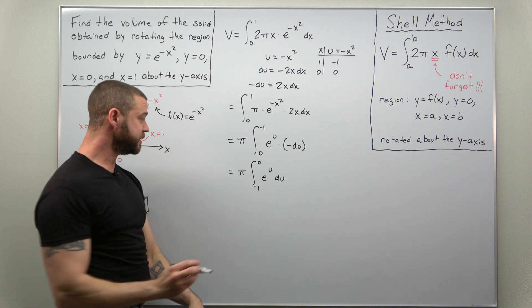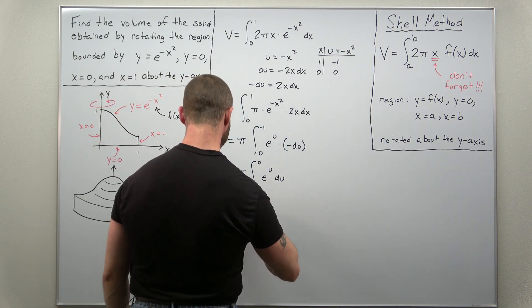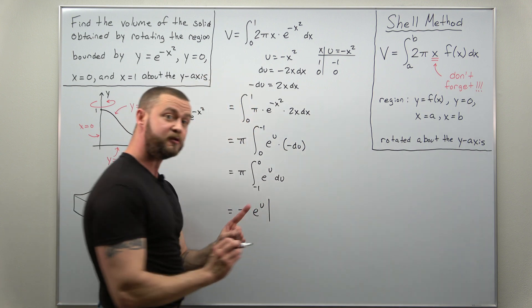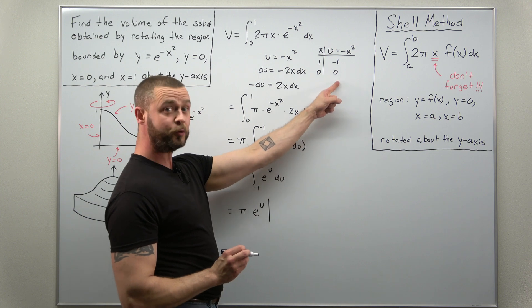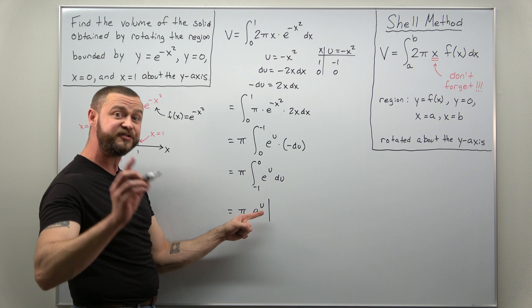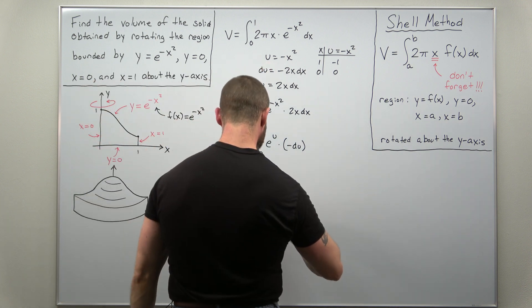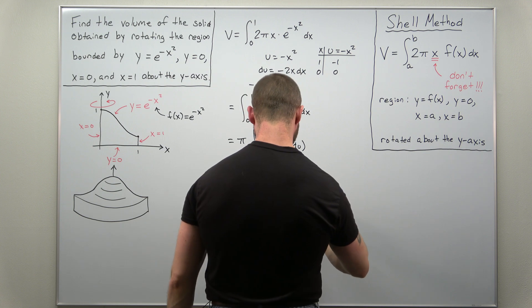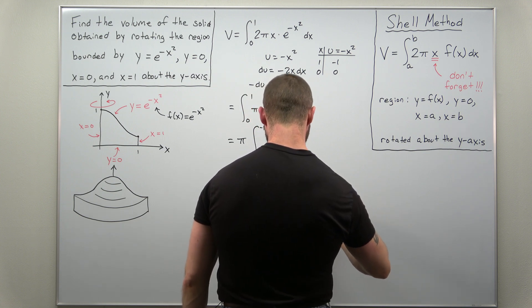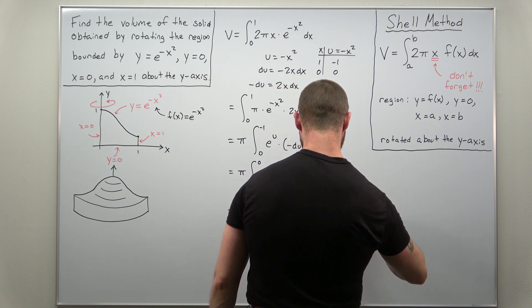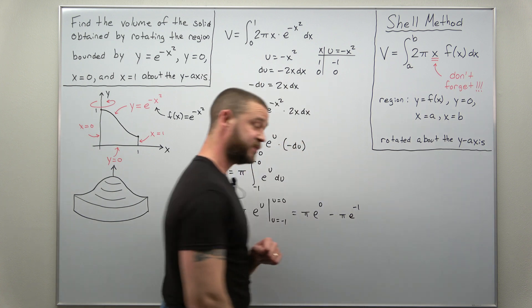And that integral is now really simple. Your antiderivative is just e to the u. But we evaluate this using our converted u limits. Worth pointing out, once you convert your limits, you never have to back substitute your u in terms of x. So we'll evaluate this at u equals negative 1 and then u equals 0. And if you plug these in, we get π times e to the 0 and then minus π times e to the negative 1.